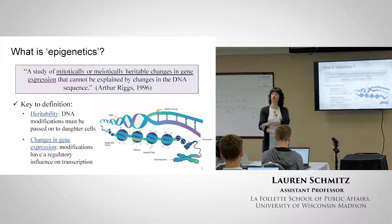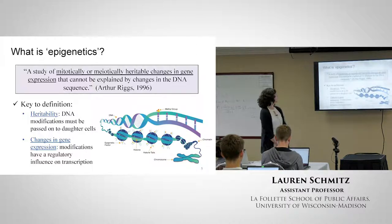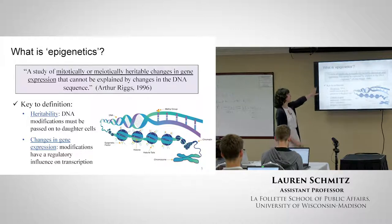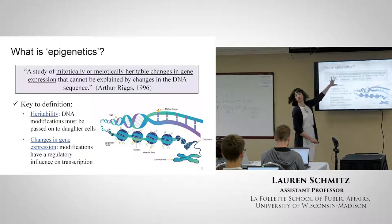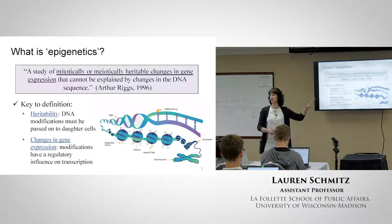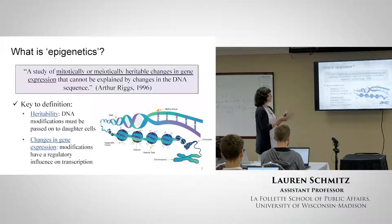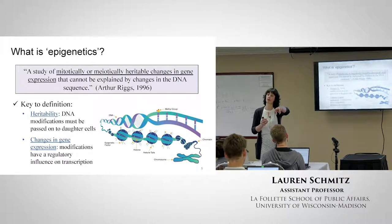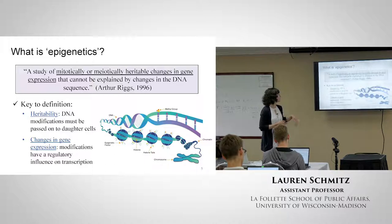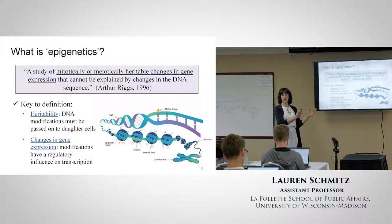When we say it's passed on to daughter cells through mitosis and meiosis - more in the sense of mitosis. With meiosis, it's more referring to things like genomic imprinting. With mitosis, every time the parent cell divides into two daughter cells, the newly synthesized strand is going to acquire those same methyl marks. So it's not just in one generation of cells.